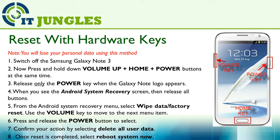When you see the Android system recovery screen, then release all the buttons. From the Android system recovery menu, select Wipe Data Factory Reset. You can use the volume key to move to the next menu item. Press and release the power button to select. Confirm your action by selecting Delete All User Data.